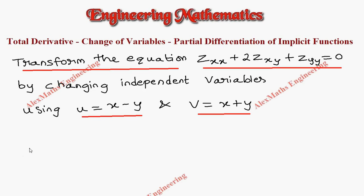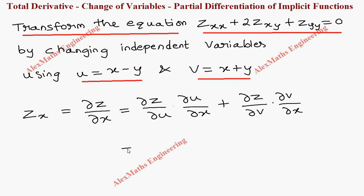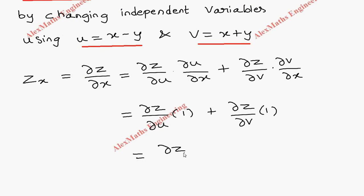As a first part, we are going to find zx, which is ∂z/∂x. By the chain rule, this is ∂z/∂u times ∂u/∂x plus ∂z/∂v times ∂v/∂x. Now ∂u/∂x is 1 and ∂v/∂x is also 1. So finally we got ∂z/∂x equals ∂z/∂u plus ∂z/∂v.